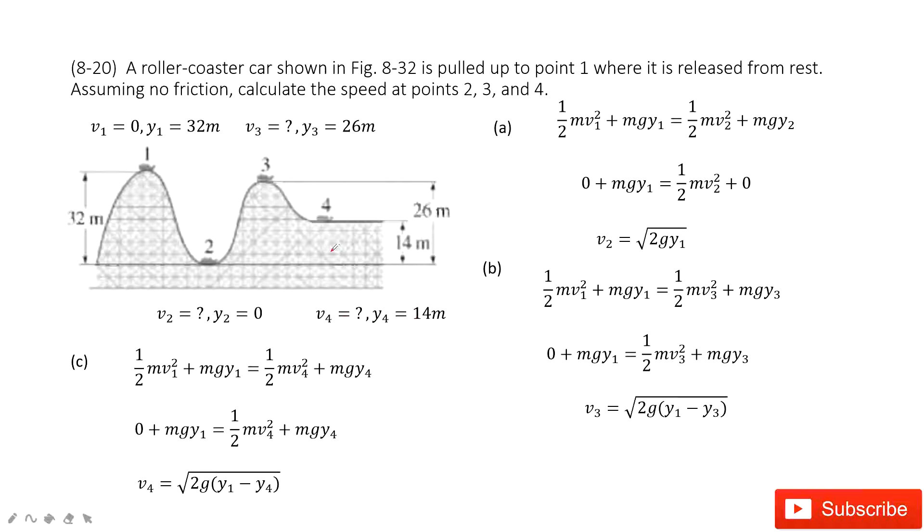So we need to find velocity at each position. Agree? Yes, so let's consider the first one. In this roller coaster, only gravity does work, which makes mechanical energy conserved. So energy at position 1 equals energy at position 2.